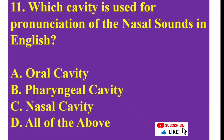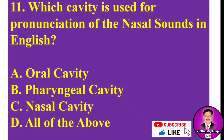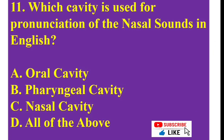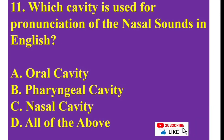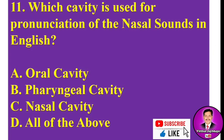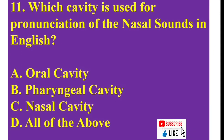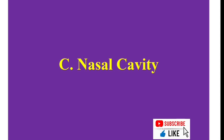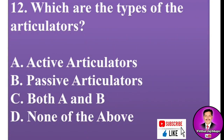MCQ number eleven: Which cavity is used for the pronunciation of nasal sounds in English? A) oral cavity, B) pharyngeal cavity, C) nasal cavity, D) all of the above. The correct answer is C — the nasal cavity.